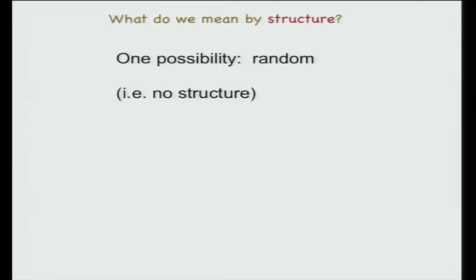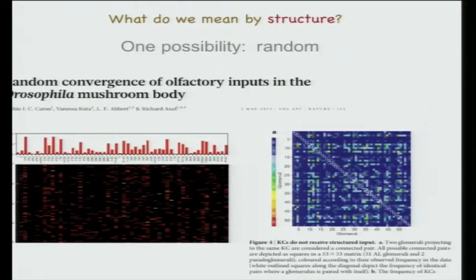One possibility for structure is random. You might think the brain is not random—you can think, for one—but there is an interesting and relatively recent result about this.